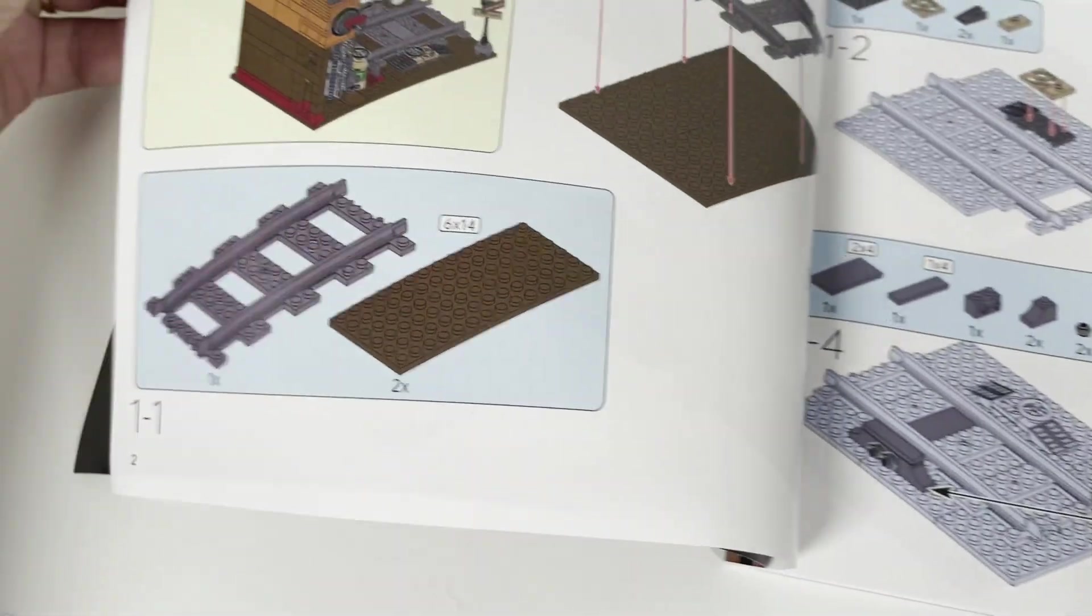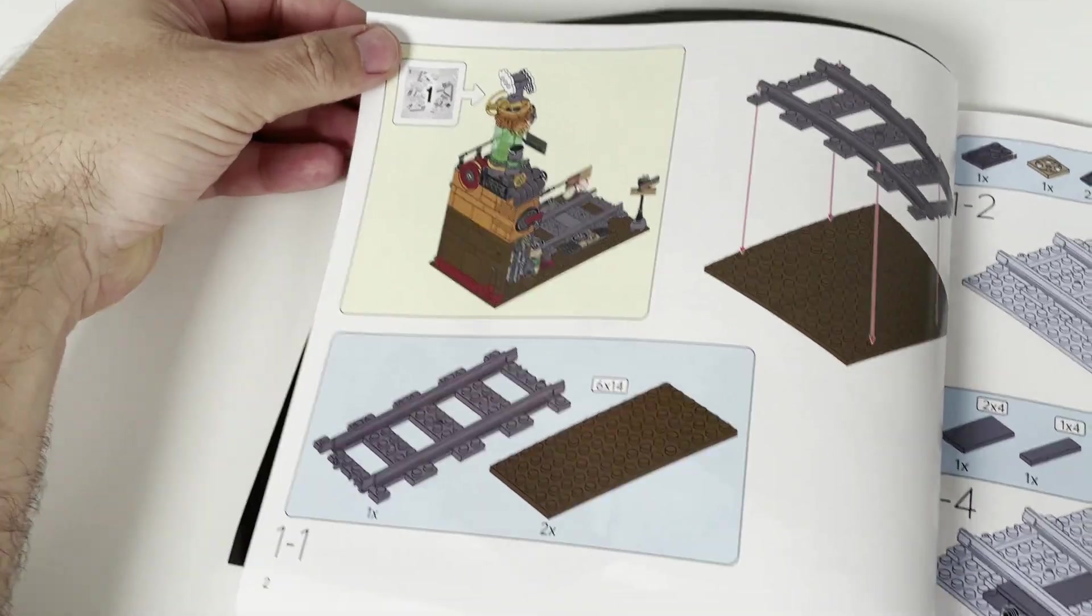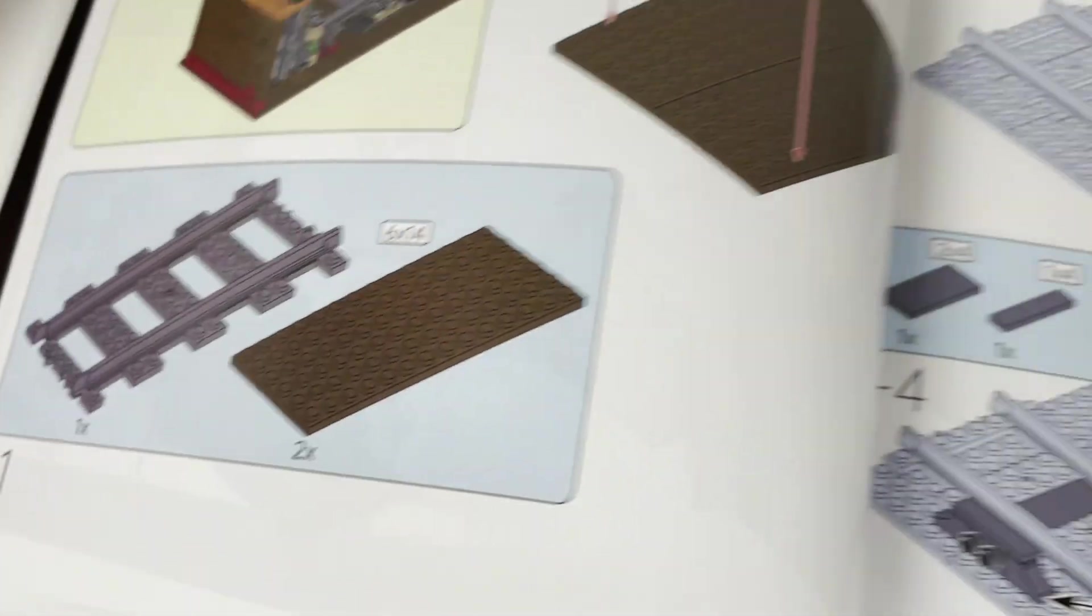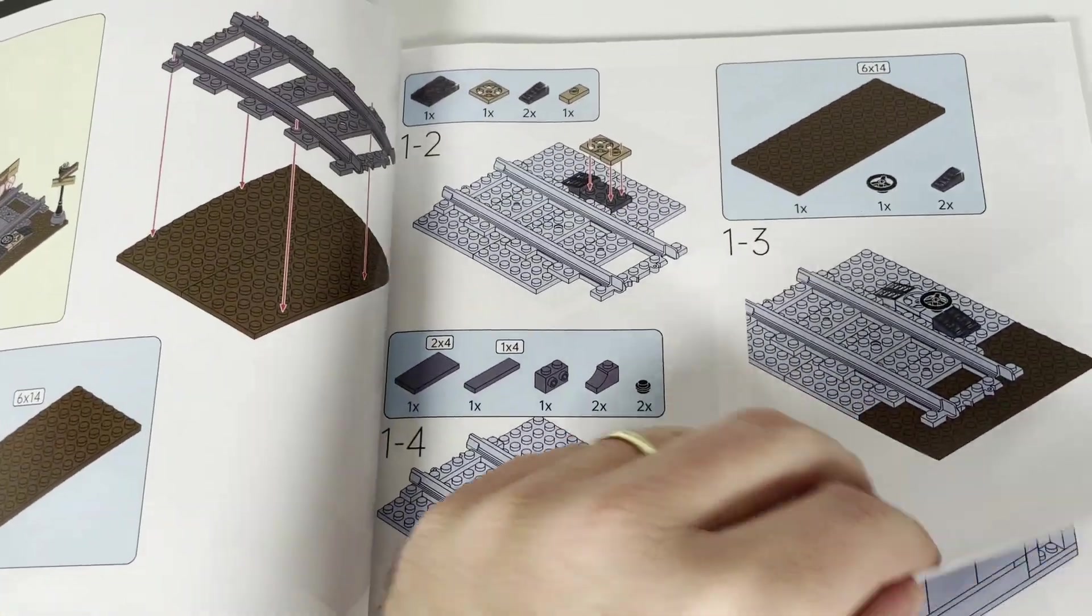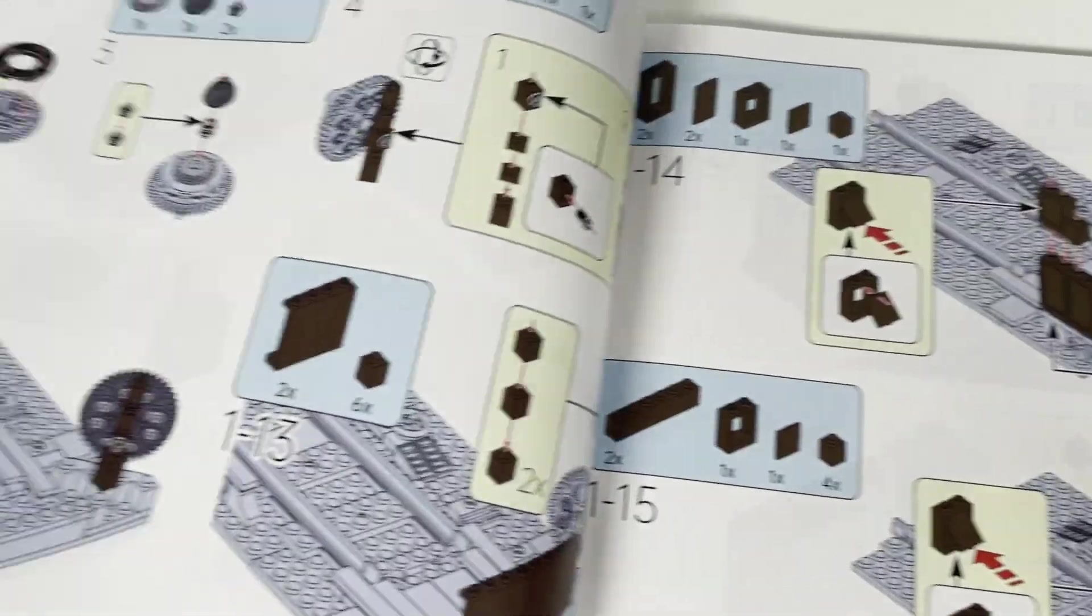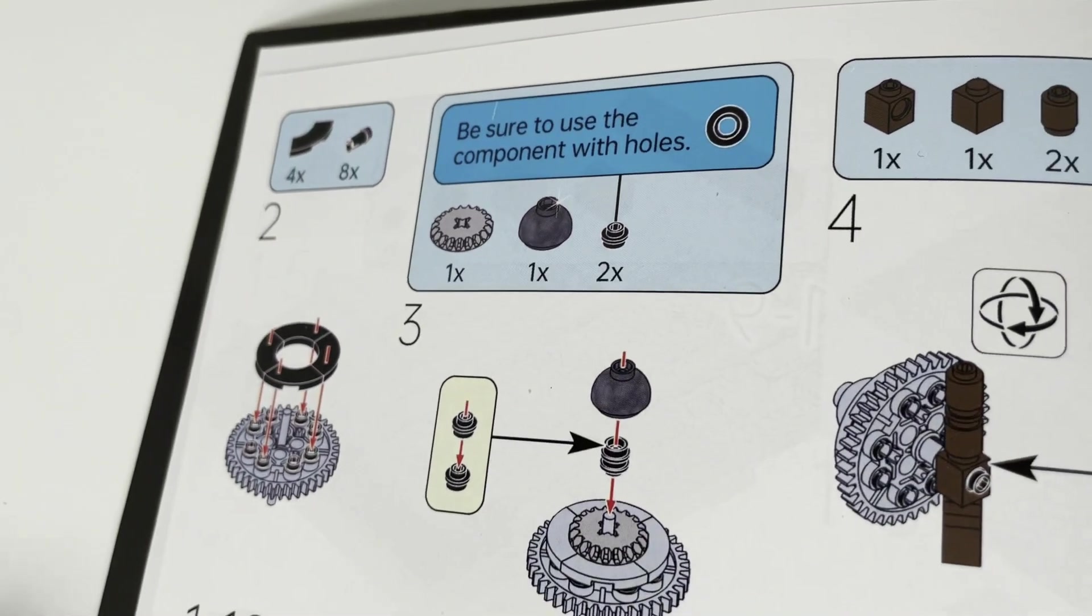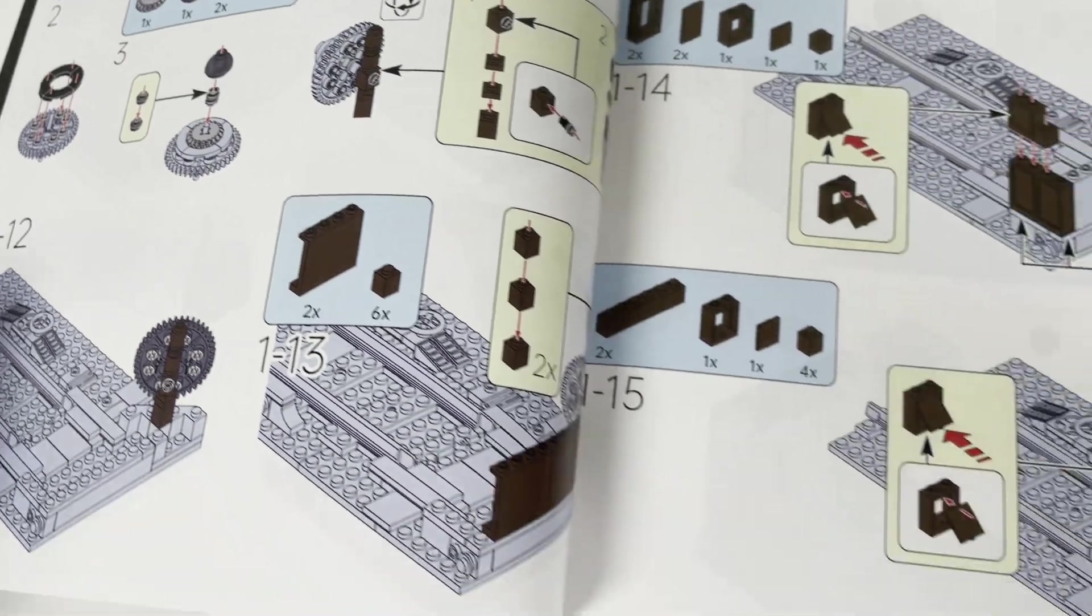Without any further introduction you get the instructions for the build. What I really like is that all the plates and tiles have the size printed next to it. A highlight to me is that they indicate when you have to use a stud with a hole. For other brands it is sometimes really hard to distinguish which version of the stud you should use.